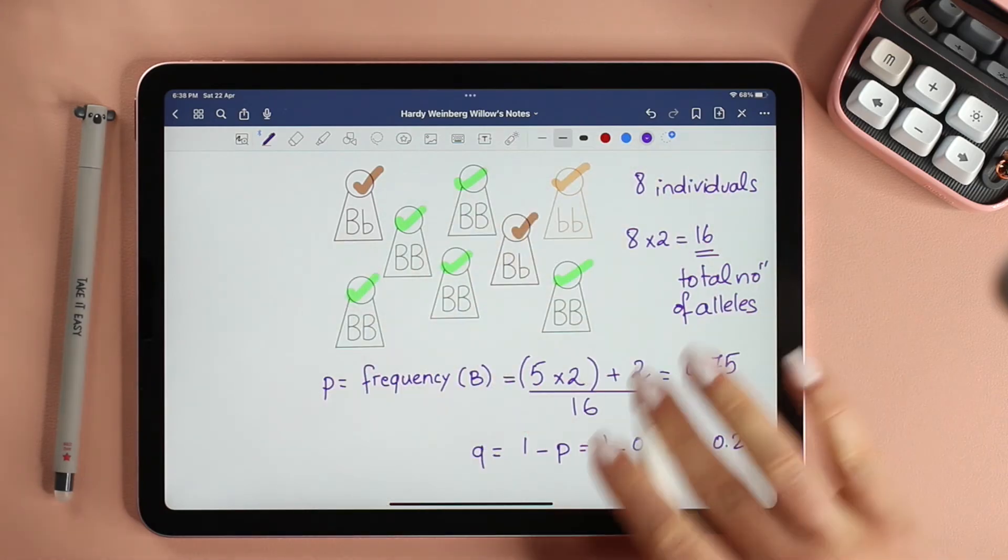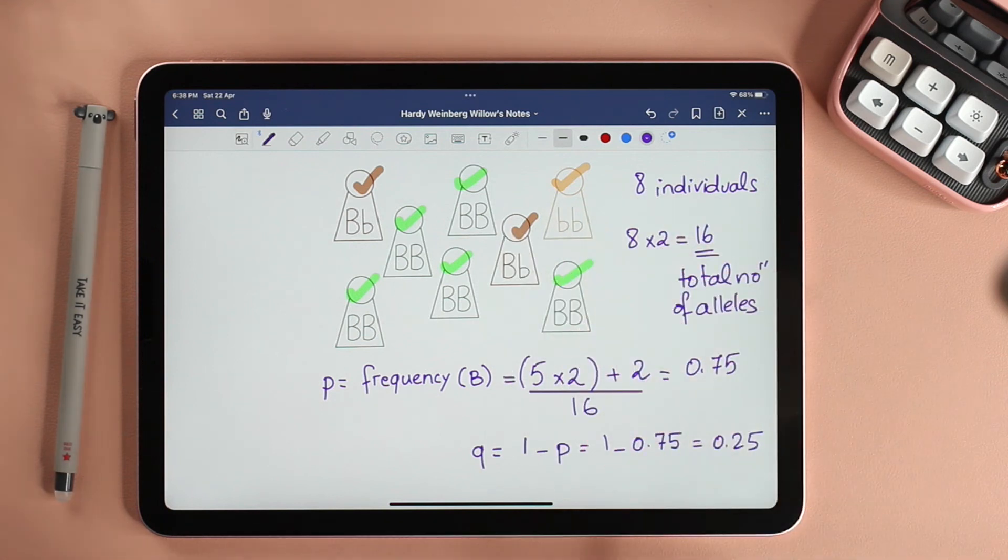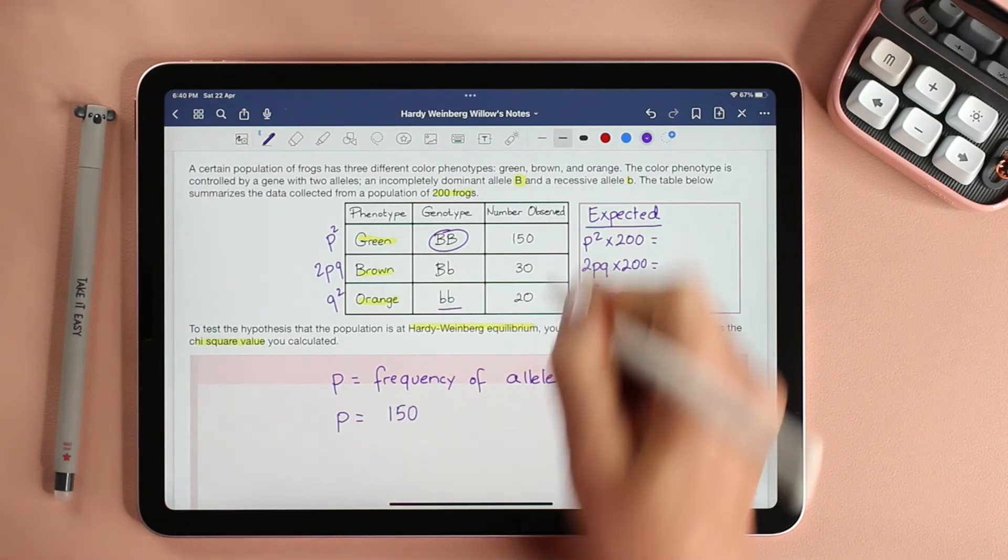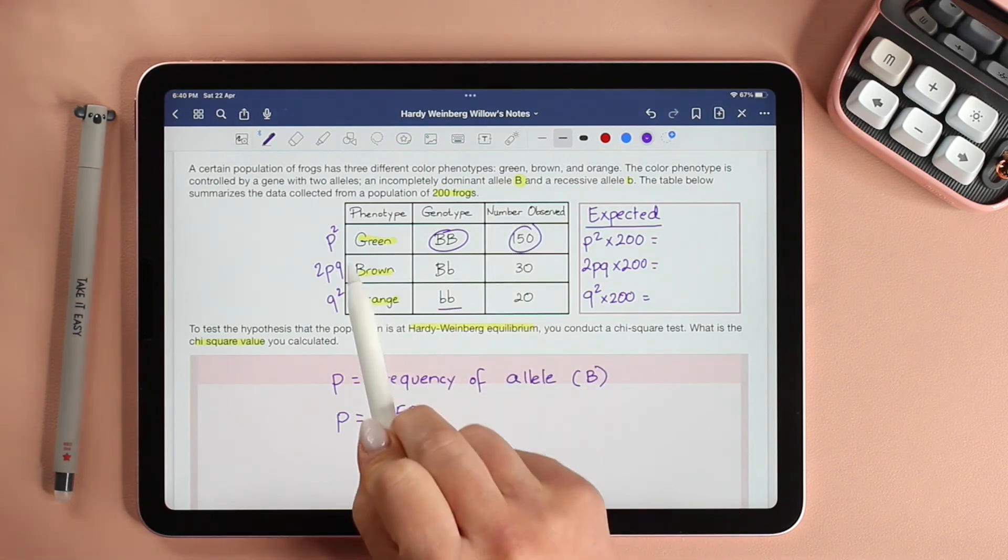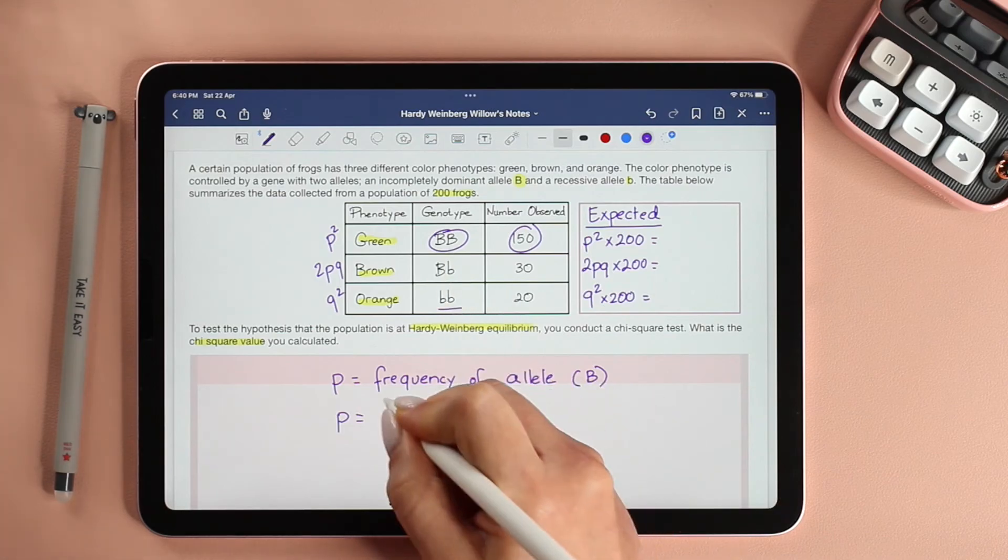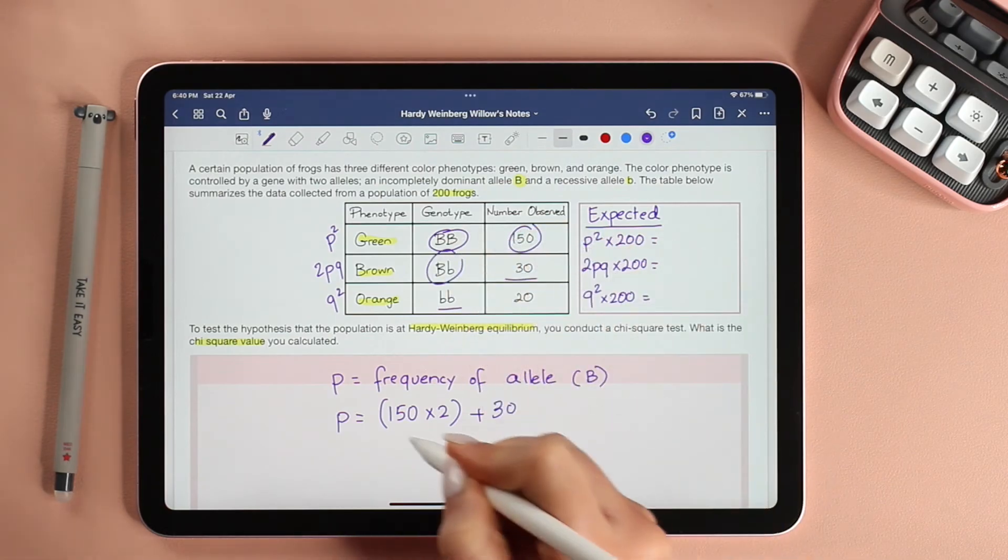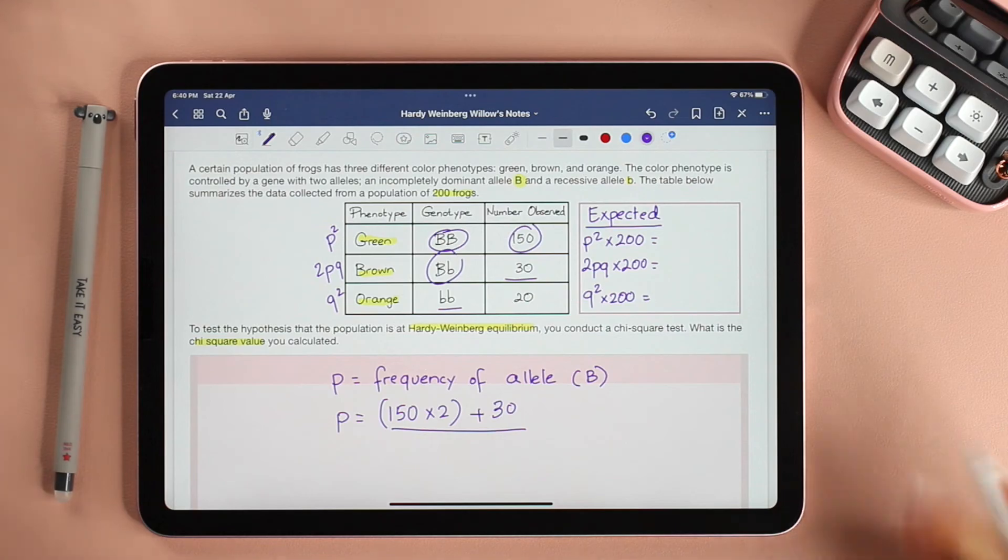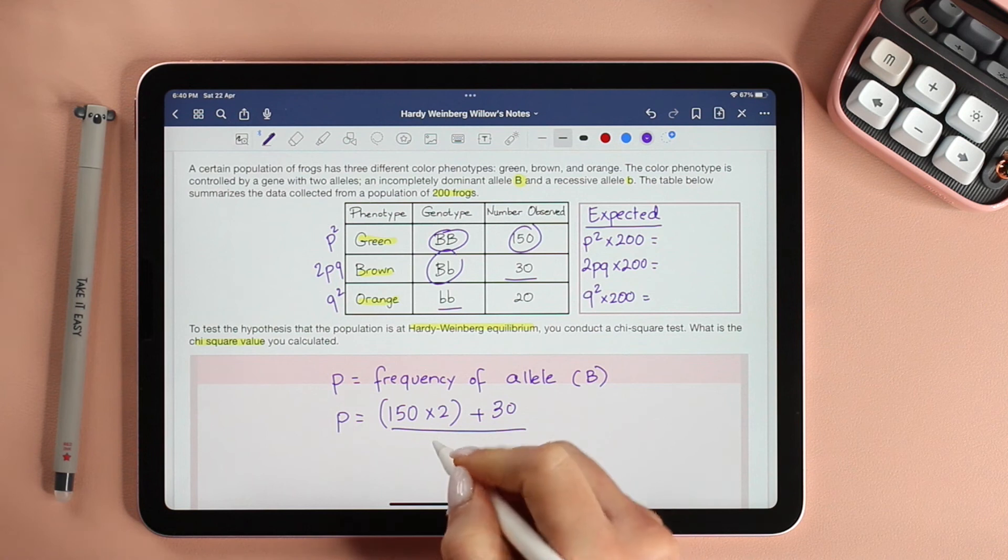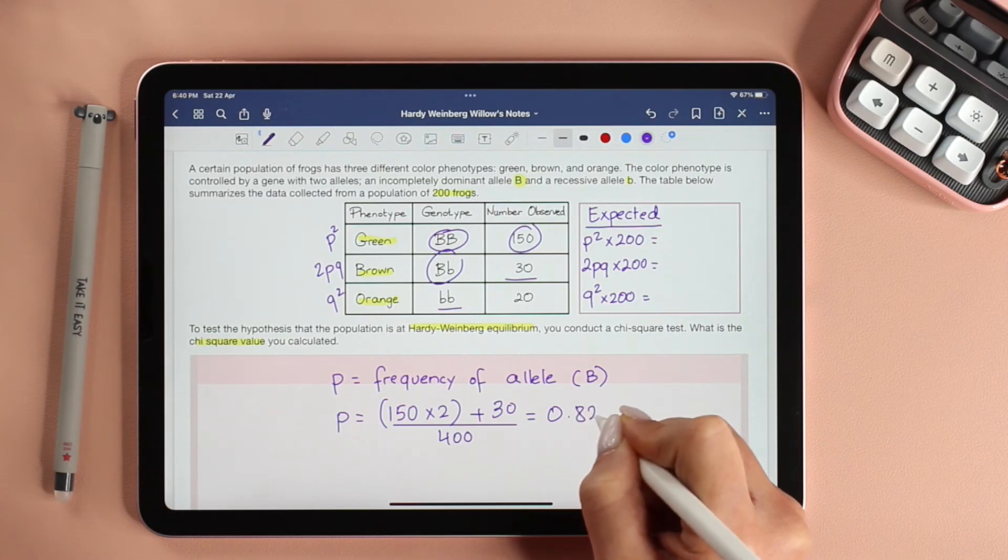Once we have p, it's very easy to find q. q is 1 minus p, which in this case is 1 minus 0.75, which is equal to 0.25. Now that we saw how we find p and q in this little small population, let's take this knowledge and apply it to our question. Therefore, p here will be equal to 150, because there are 150 frogs that are green, and each green frog has two dominant alleles, so times 2. And we're going to add to that the brown, which is 30. And we're going to divide it by the total number of alleles. In this case, if we have 200 frogs, then we're going to have 400 alleles.